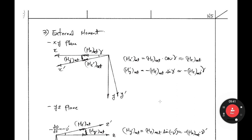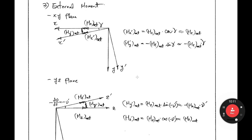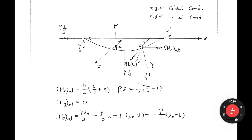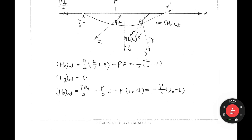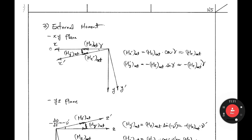To get the moment in the local coordinate system, we divide into three planes: XY plane, YZ plane, and ZX plane. This is a 3D problem, but in the 3D figure it is very difficult to get the local moments directly. So we divide into three planes to easily calculate the local coordinate moments from the global ones. Let's look at the XY plane — that is this plane.